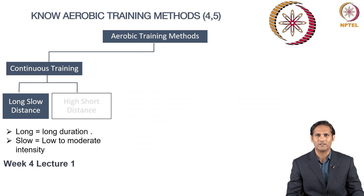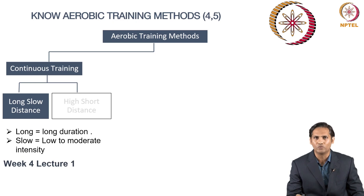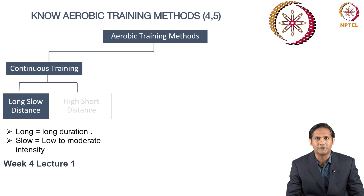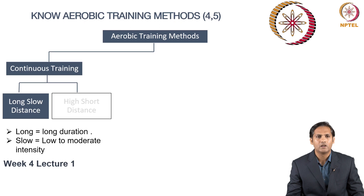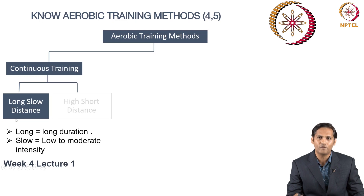Let's begin with continuous training in lecture 1. Continuous training, as the word says, is the aerobic activity you want to follow. You consider any of the activities but do it in a continuous manner for a prolonged period of time. One continuous method is long slow distance — here 'long' means long duration and 'slow' means low to moderate intensity. So slow represents intensity and long represents volume, meaning you are performing an aerobic activity for a longer duration at moderate to low intensity of cardio capacity.